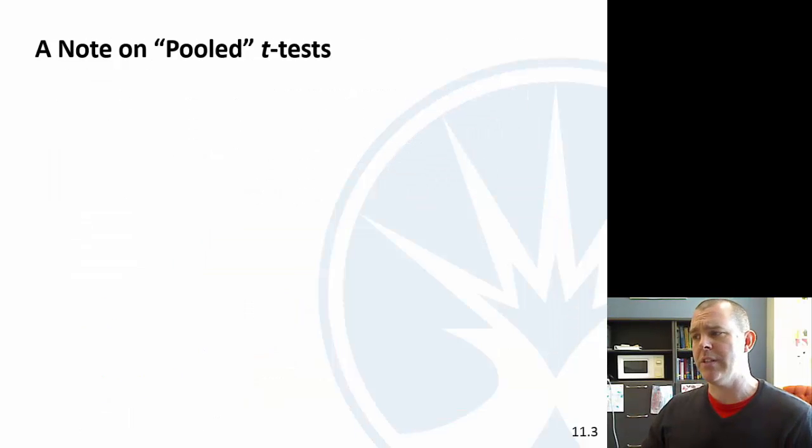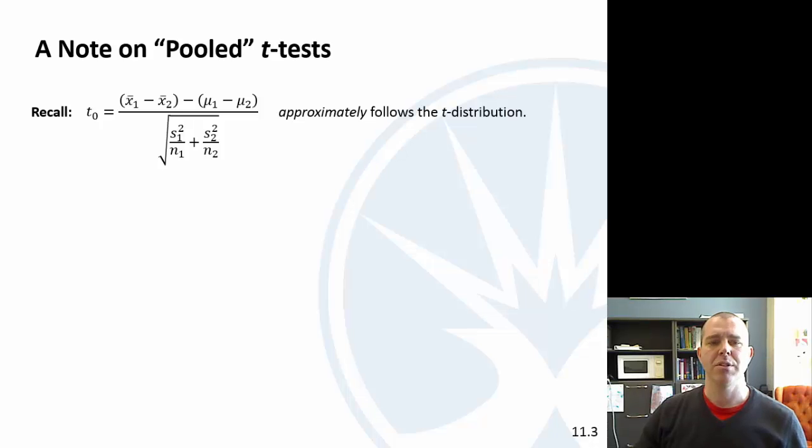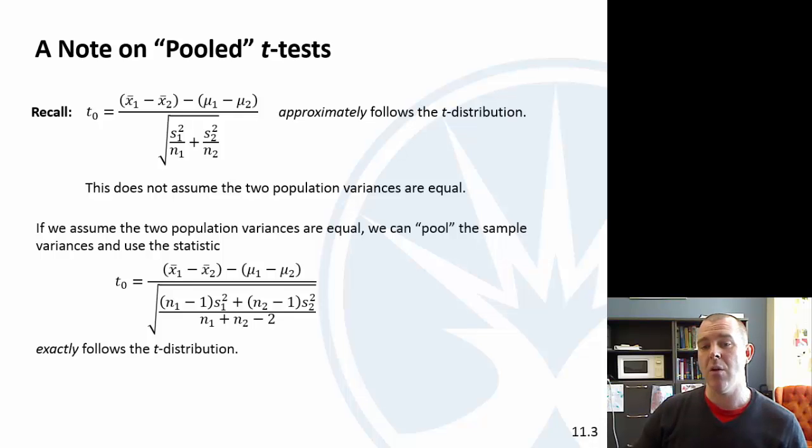Let's talk a little bit about pooled t-tests and what this means. We had this particular distribution. We said that approximately follows the t-distribution. And it doesn't assume the population variances are equal. There was no mention about that. If we assume the population variances are equal, we can pool the sample variances and get this crazy statistic. And this exactly follows the t-distribution. So the question is, why not pool them?